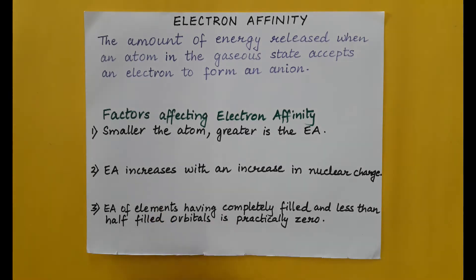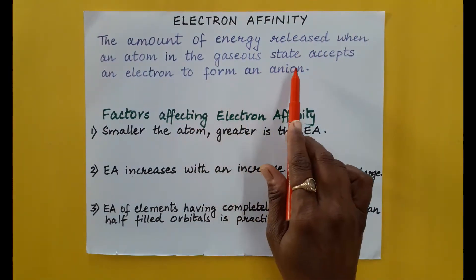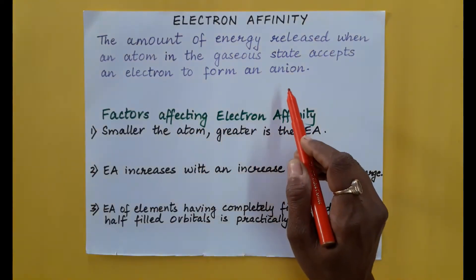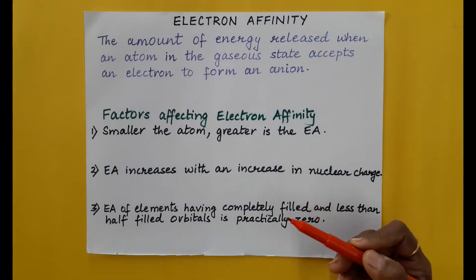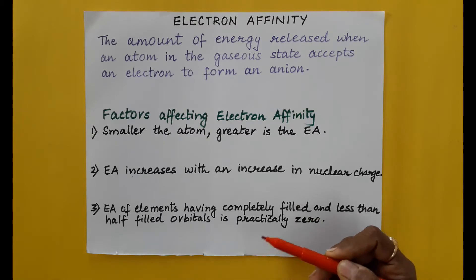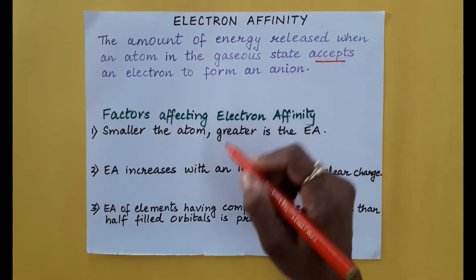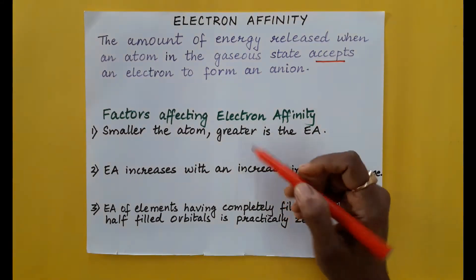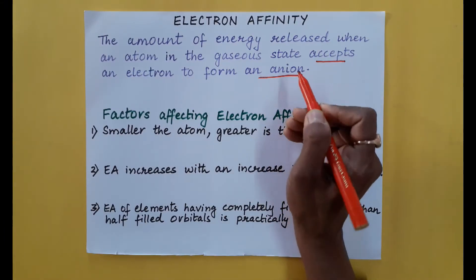Our next property is electron affinity — the amount of energy released when an atom in the gaseous state accepts an electron to form an anion. This property is basically for non-metals. Non-metals gain electrons to become stable. The atom releases a certain amount of energy, gains the electron, and finally becomes stable, forming an anion.